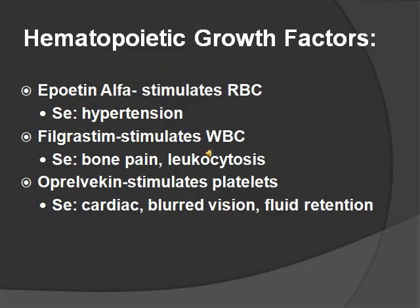Hematopoietic growth factors: epoetin alfa stimulates red blood cell production — side effect is hypertension. Filgrastim stimulates white blood cell production — side effects are bone pain and leukocytosis. Oprelvekin stimulates platelet production — side effects include cardiac side effects, blurred vision, and fluid retention.